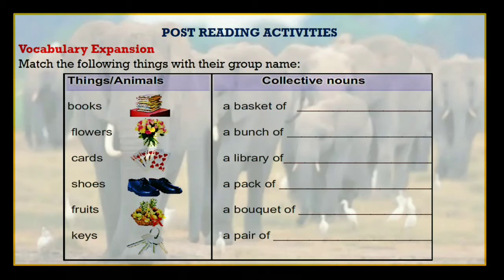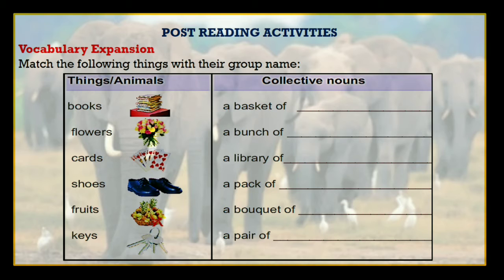In the post-reading activities section, the very first is vocabulary expansion. Here, students, there are some things given and you have to match them with their group name. Match the following things with their group name. The things are: books, flowers, cards, shoes, fruits, keys. And you have to write their collective nouns.